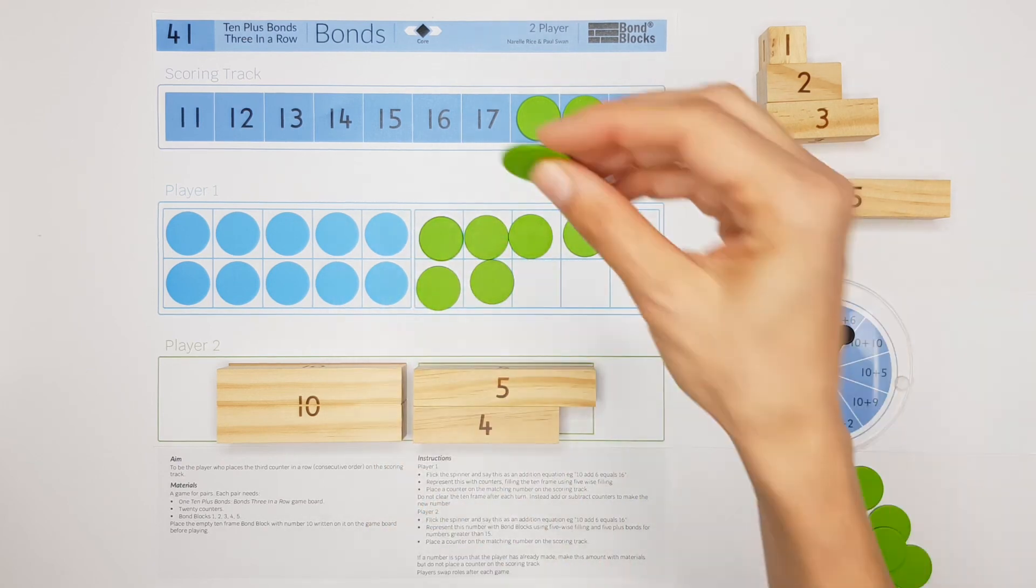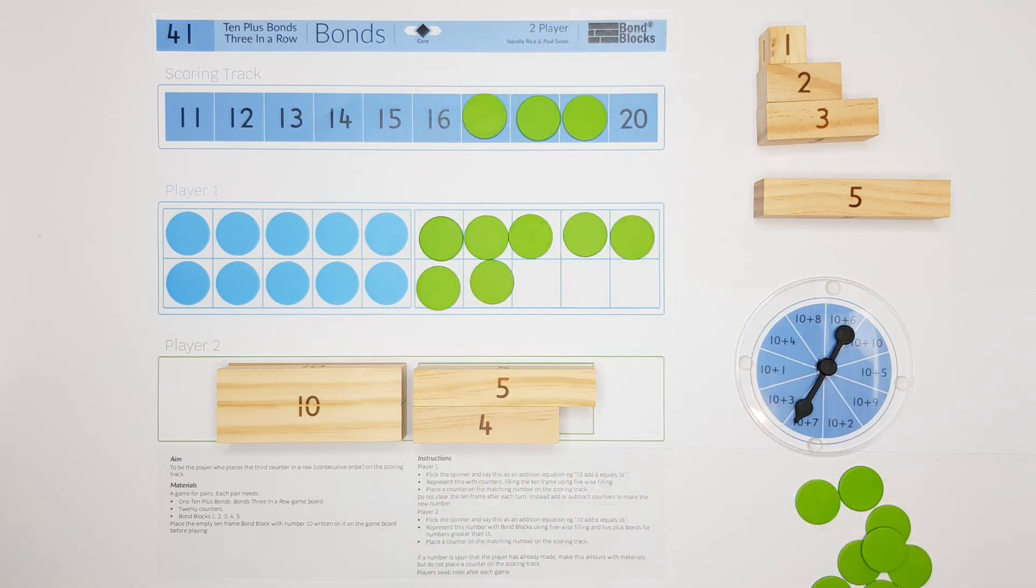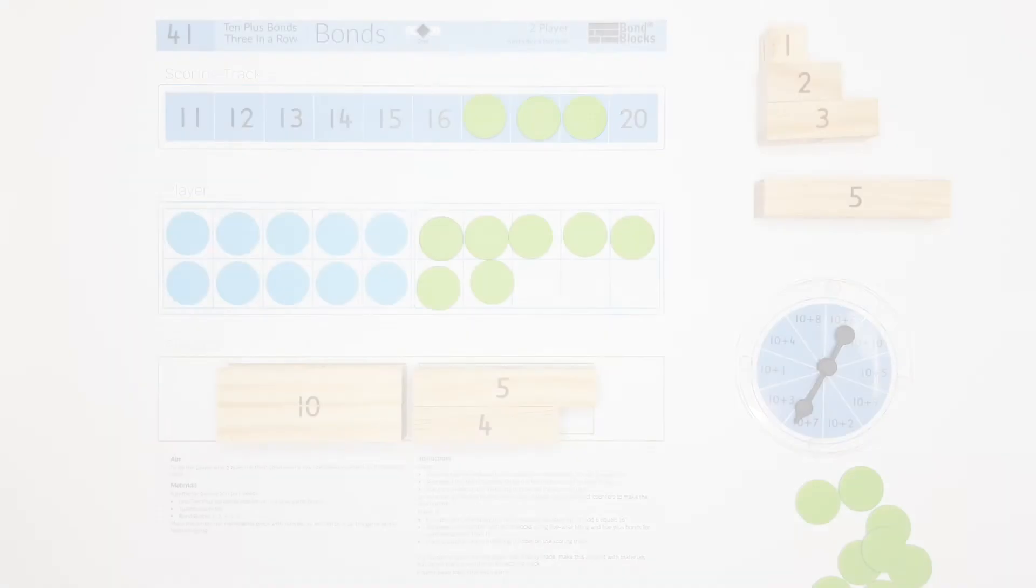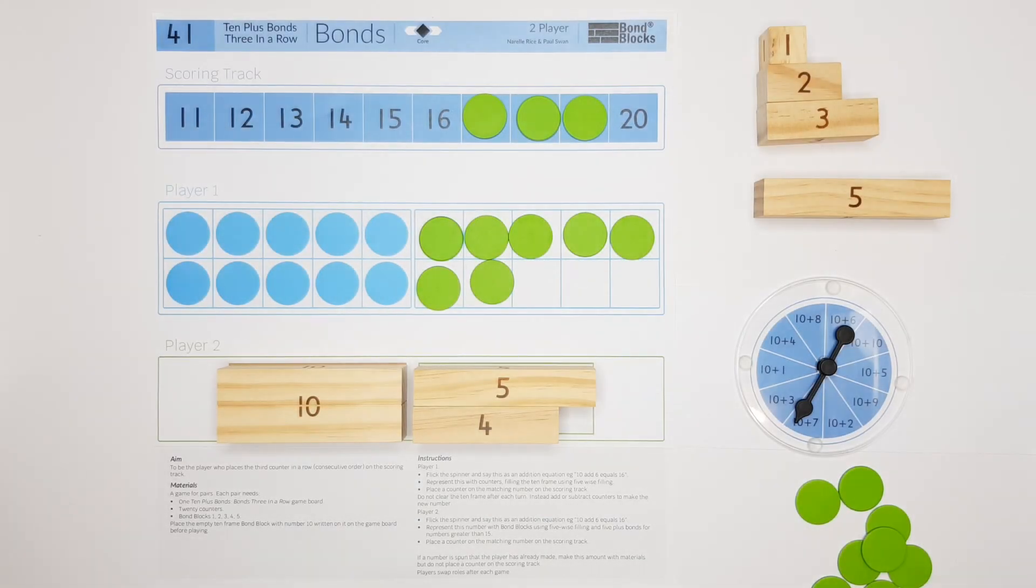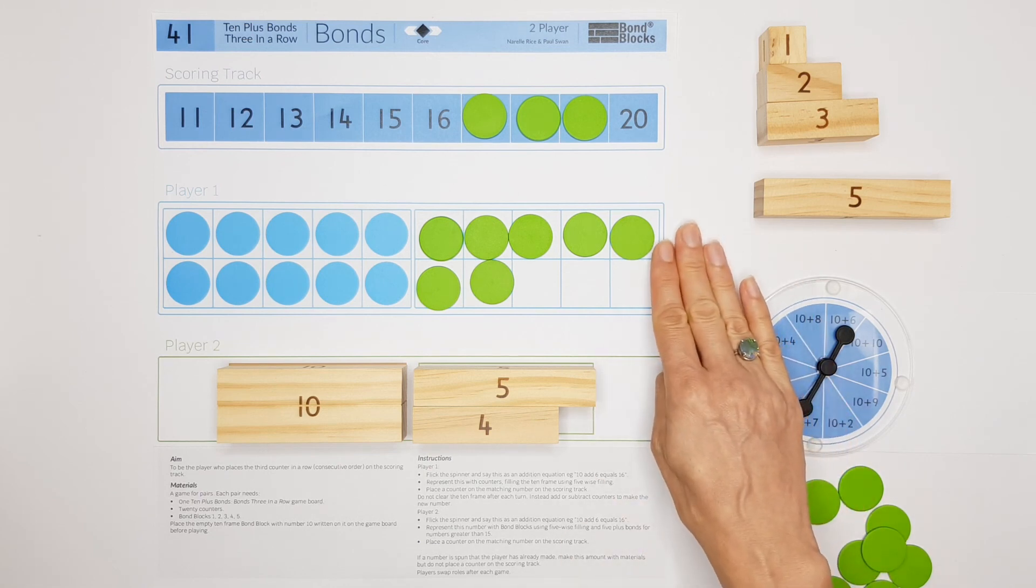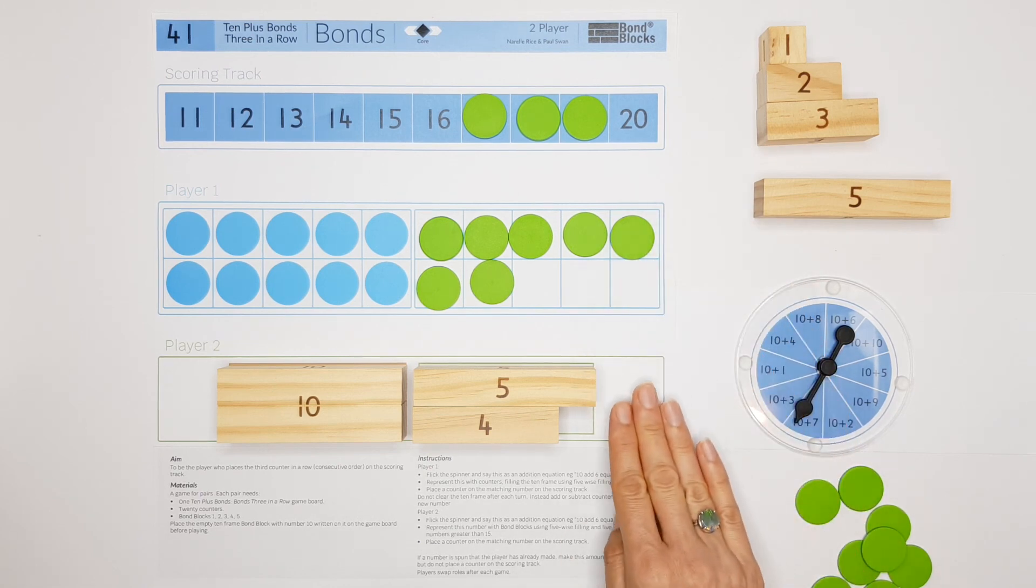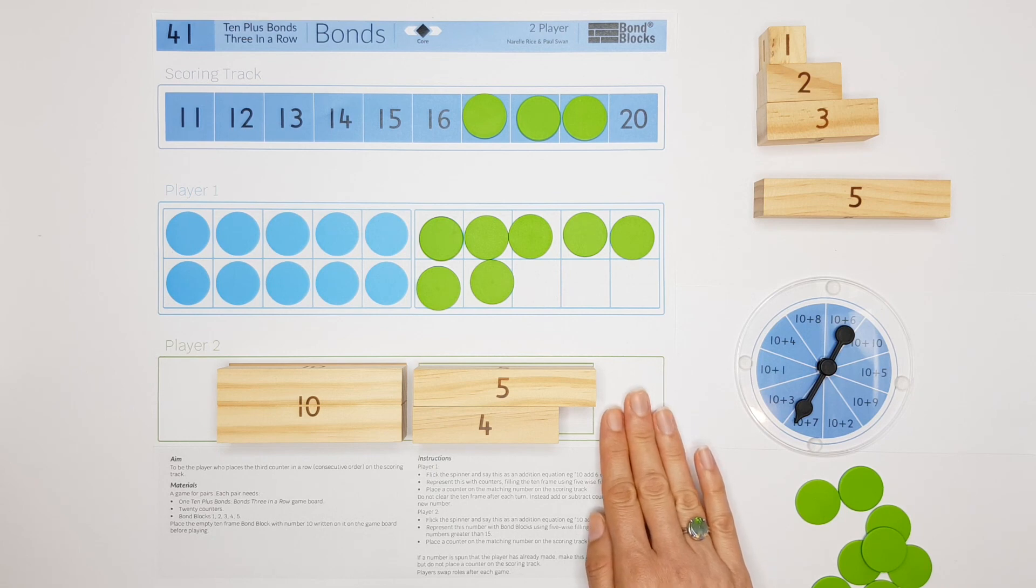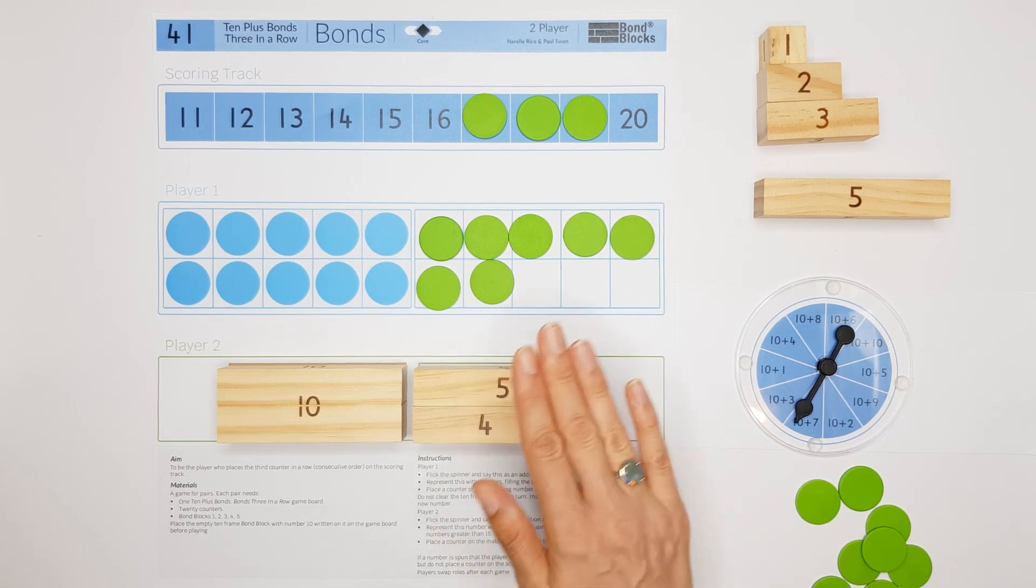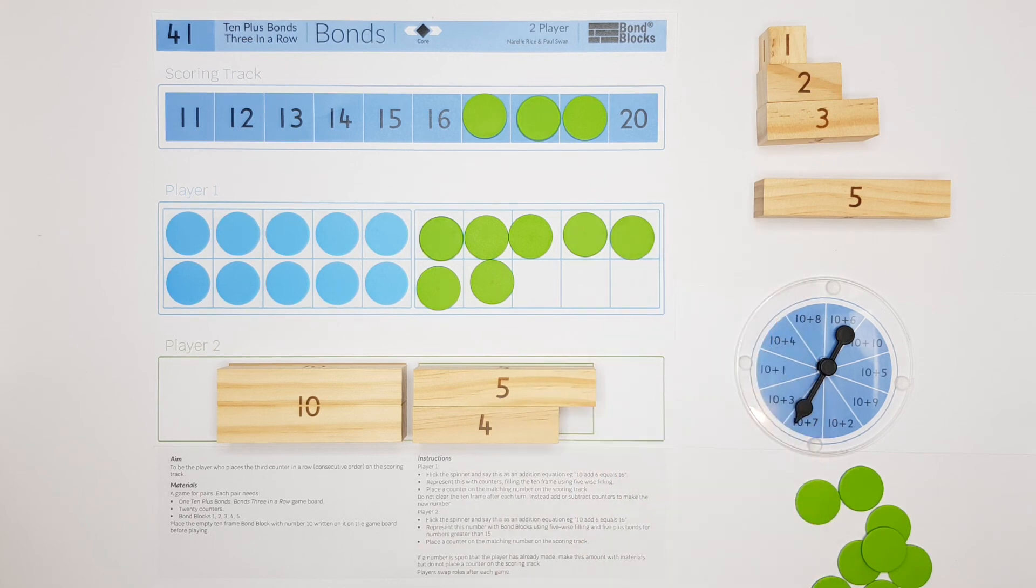When you play this game again tomorrow, if you were the player using the counters, when you play again swap roles and you use the bond blocks, and vice versa. If you are using bond blocks, you play next using counters.